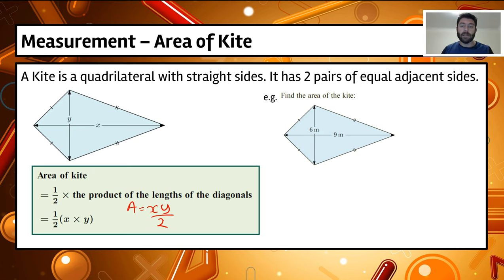But it comes out with the same answer. Alright, so let's have a look at this example here, find the area of this kite. We've got a diagram there, we've identified it's a kite. We've got nine metres diagonal horizontal and the vertical is six metres.